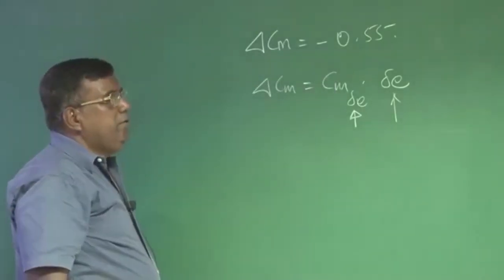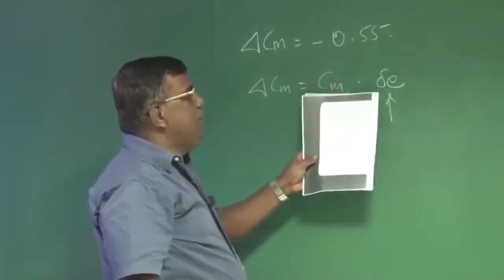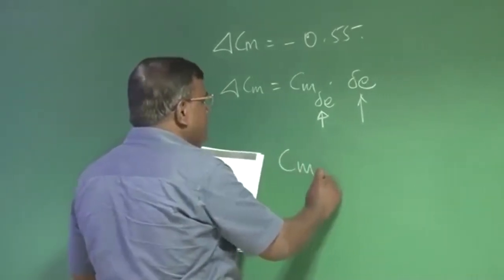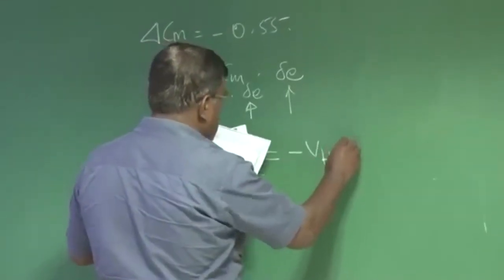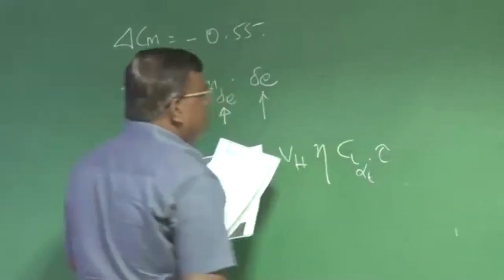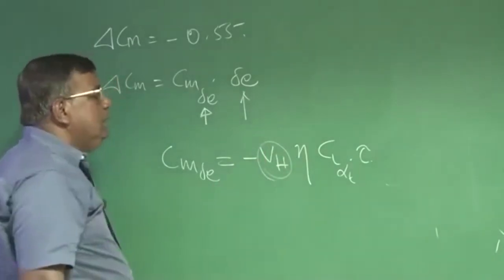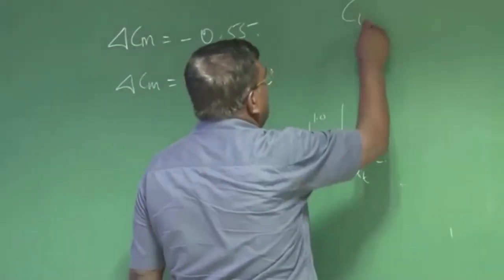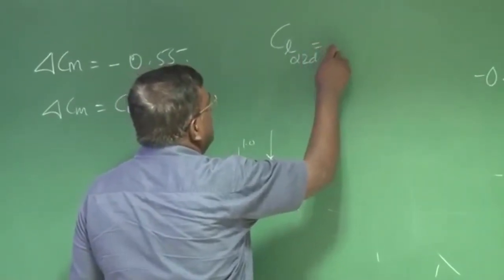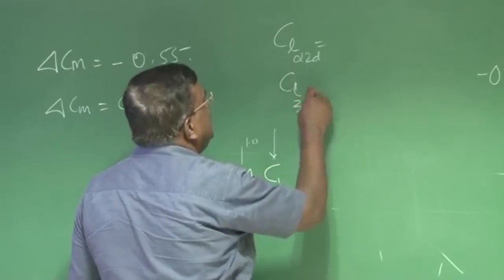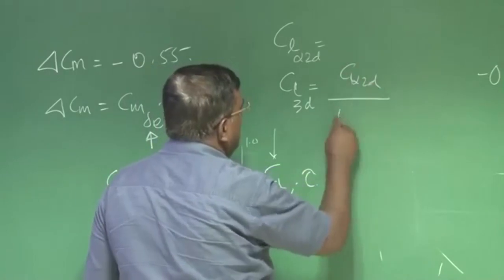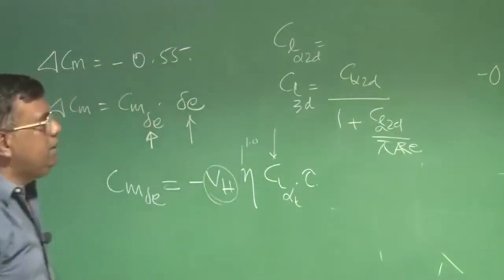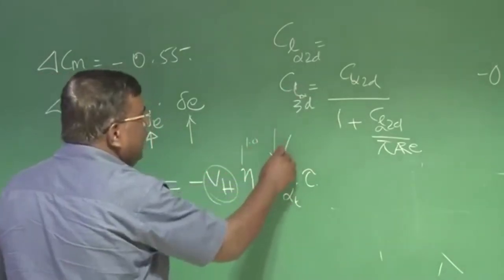We realize this delta CM is minus 0.55, which has to be nullified. So I'm asking how much elevator and how much CM_delta_E value the aircraft should be able to generate. Remember, CM_delta_E is given as minus V_h times eta times CL_alpha_tail times tau. V_h we have already assumed, eta I can take as 1, and once I have selected a symmetric tail, then I know CL_alpha, CL two-dimensional alpha of the tail. So then from there I convert to 3D CL_alpha_tail as CL_alpha_2D divided by 1 plus CL_alpha_2D divided by pi aspect ratio E.